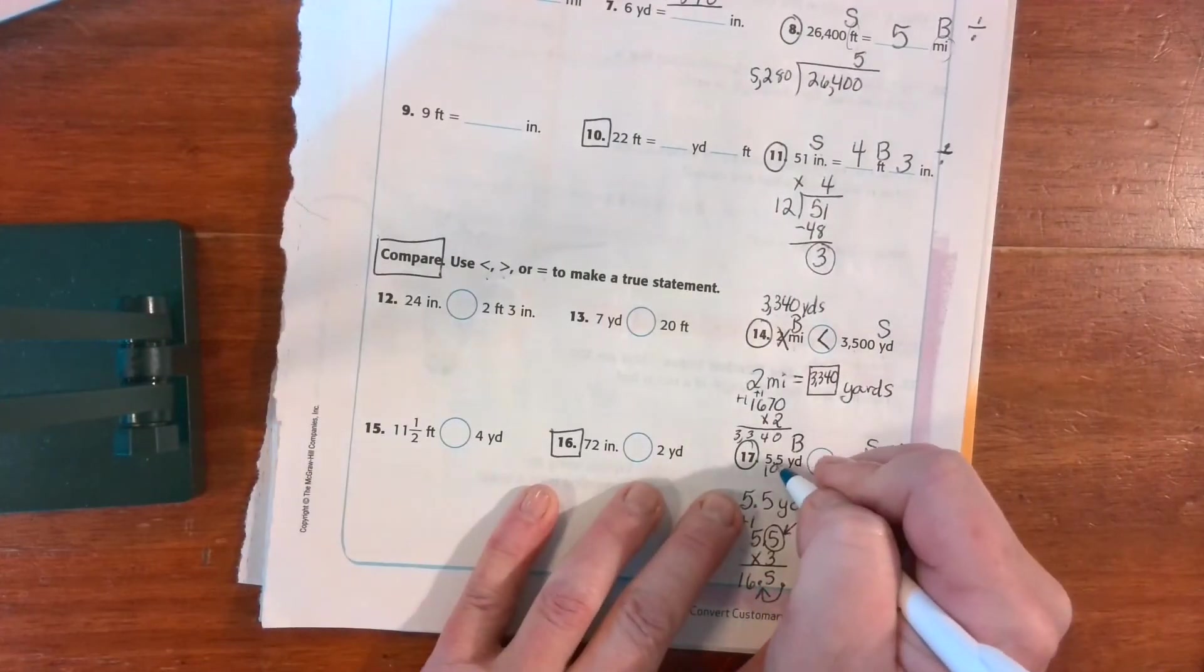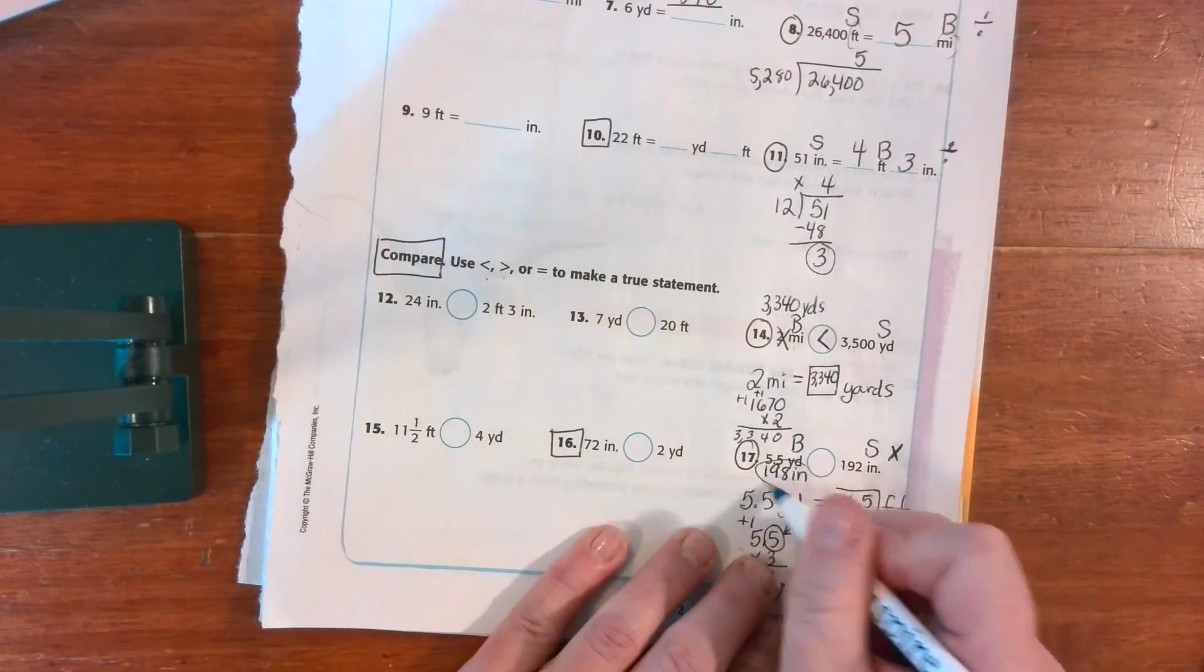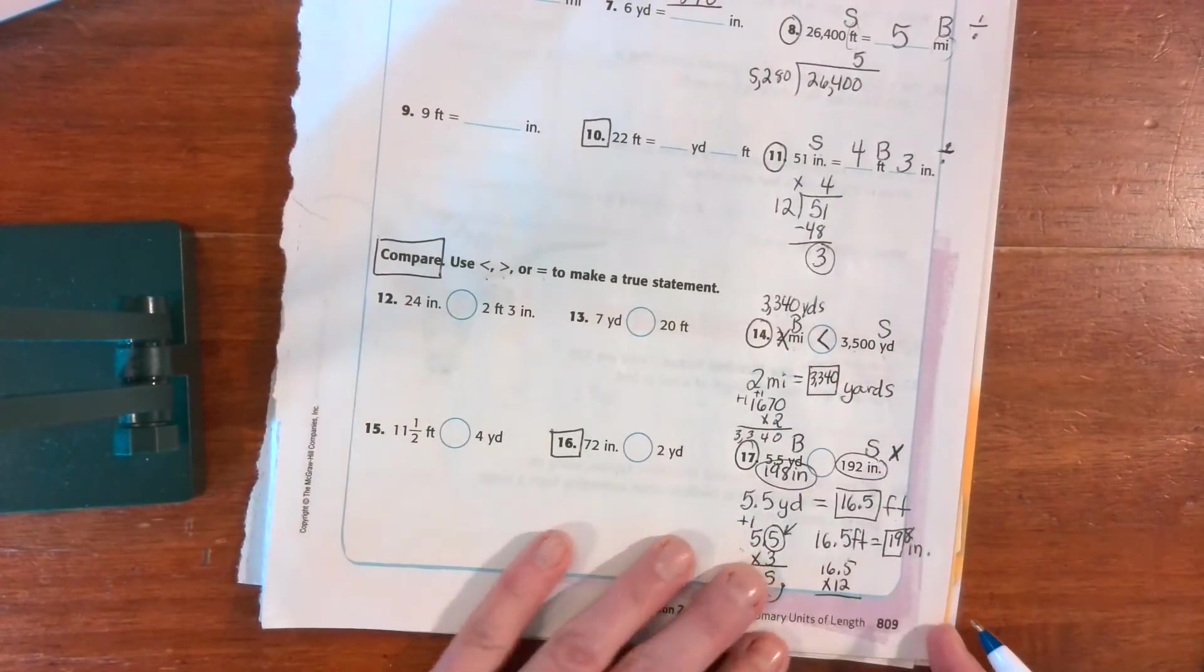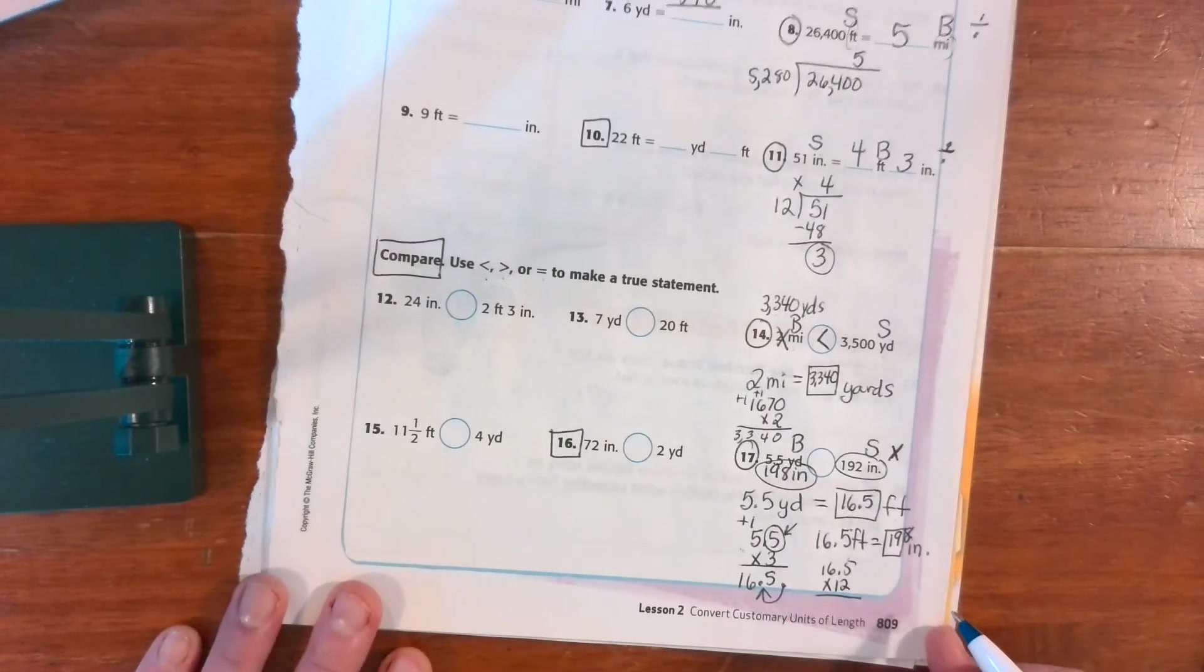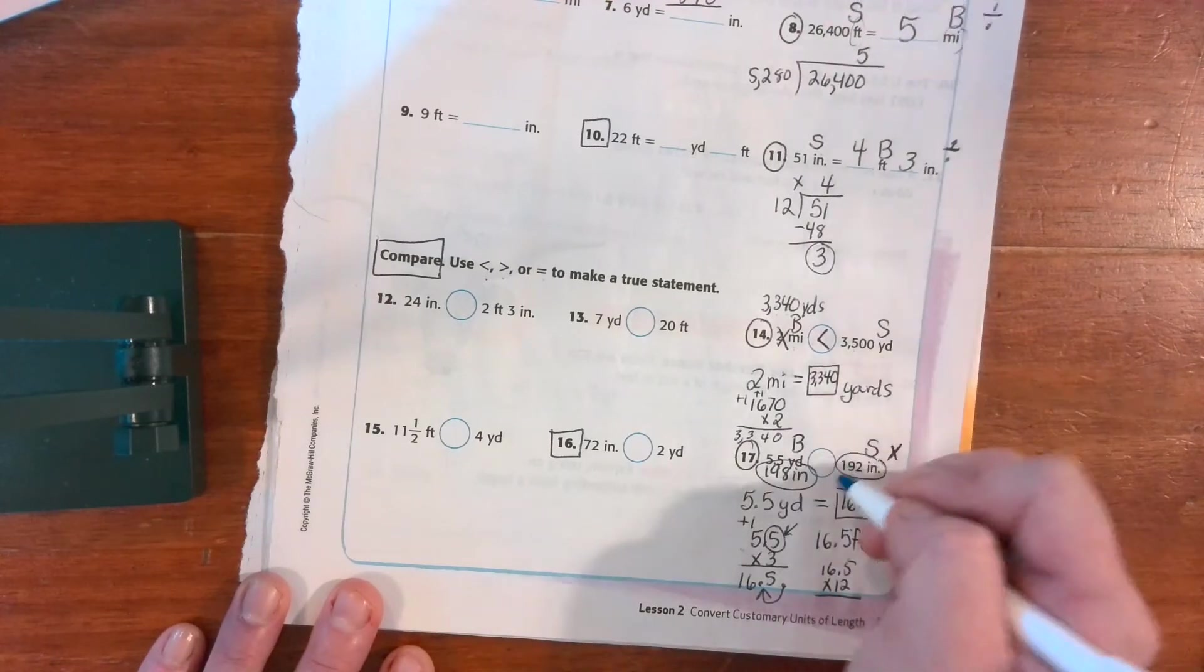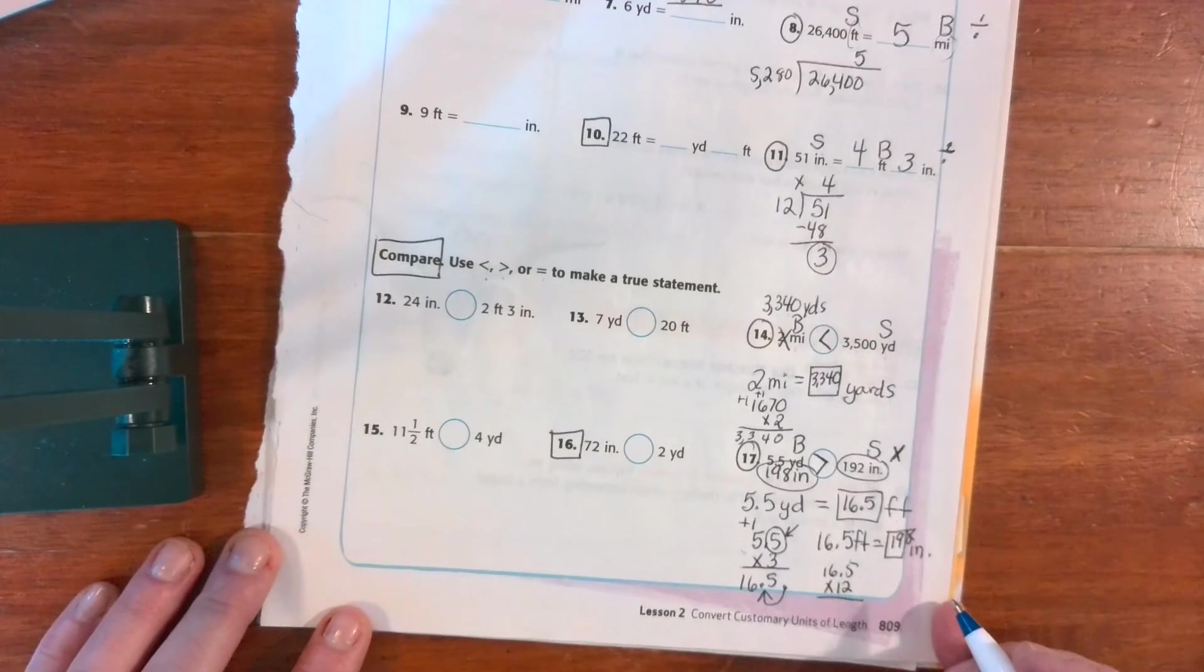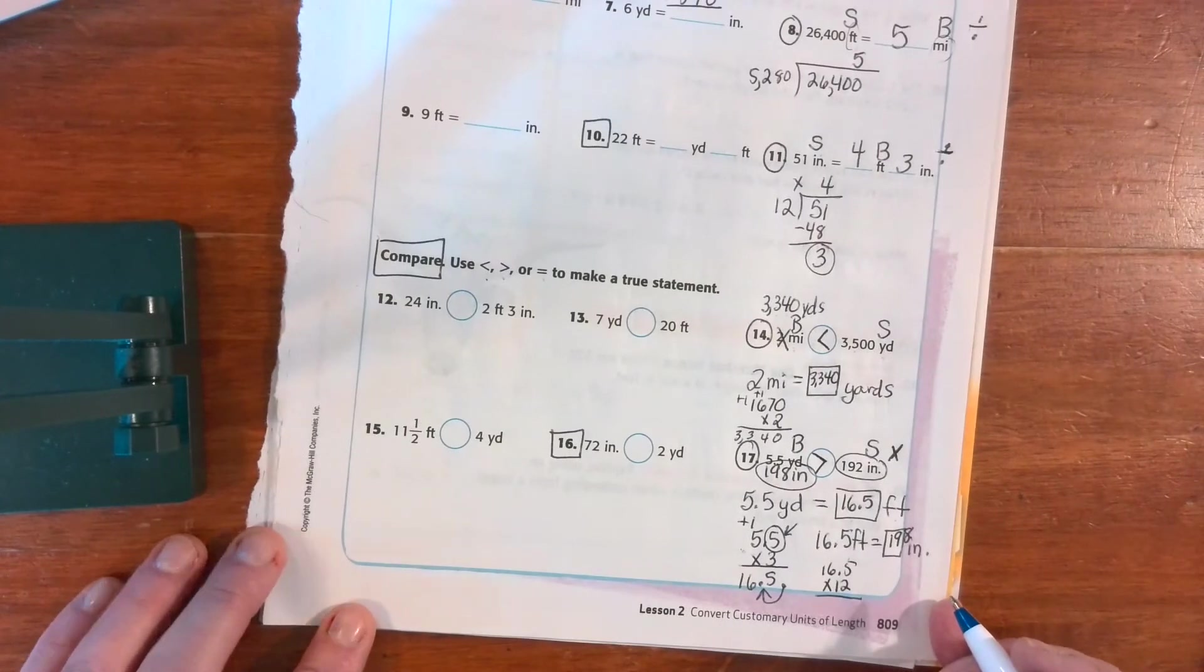So my yards equals 198 inches. Well, now I can compare. Which is bigger, 198 or 192? Comparison of whole numbers, that was quarter one. All right, 198 is bigger. It is greater than.